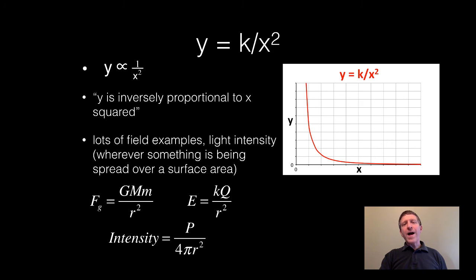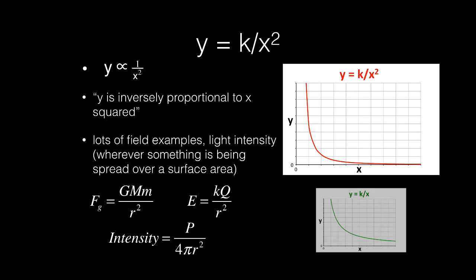You can notice right here the similarity between y equals k over x squared and y equals k over x. Sometimes just by inspection it is very hard to tell the difference, which is why looking at our theoretical relationships are such an important part of this process.